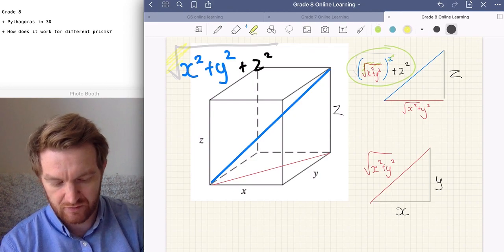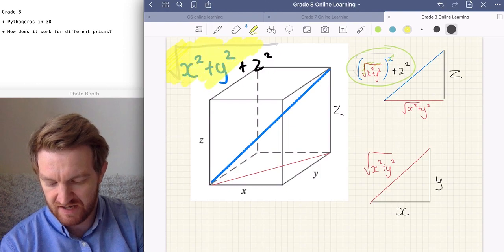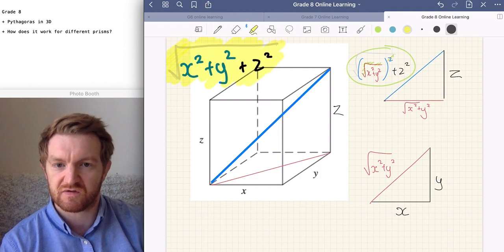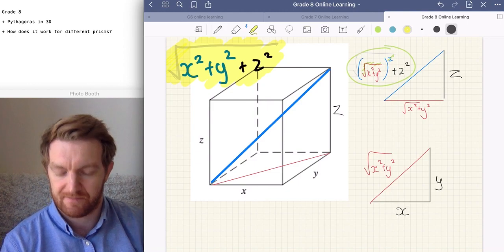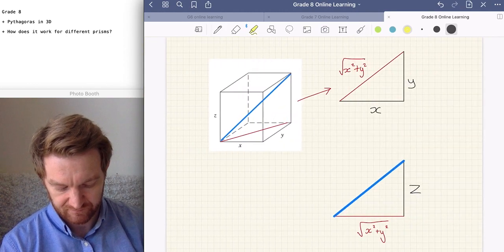Put that nice and thick so we can see it. So, it's the square root of all three variables. And that's a formula that sometimes you'll see referred to, that for cuboids, you can square root to the square of all three dimensions.